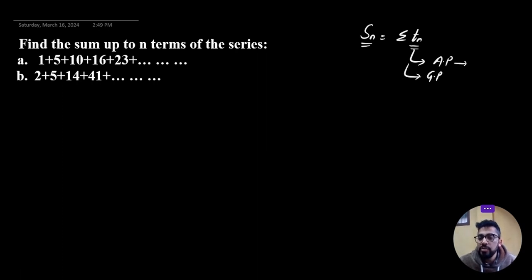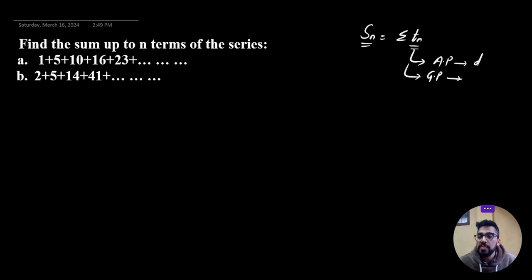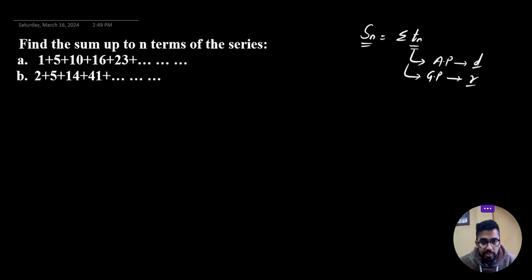In AP, the common difference d is constant — the difference between two successive terms is equal. In GP, the ratio between two successive terms is constant. So AP is defined by a common difference and GP is defined by a common ratio.